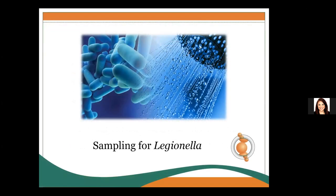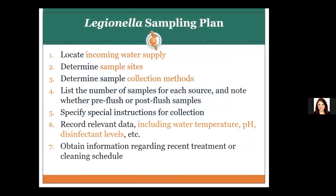For the next section on sampling for Legionella, I'll hand it over to my colleague Thomas. Hello, everyone. I'm Thomas, and we'll start to go over the sampling plans for Legionella testing. First, you'd want to locate your incoming water supply — whichever water might be entering the building — and determine the sampling sites at the facility you wish to test. Then determine the collection method, list the number of samples for each source, note whether it is pre-flush or post-flush, specify any special instructions, and record all relevant data including water temperature, pH, and disinfectant levels. Also obtain information regarding recent treatment and cleaning schedule.